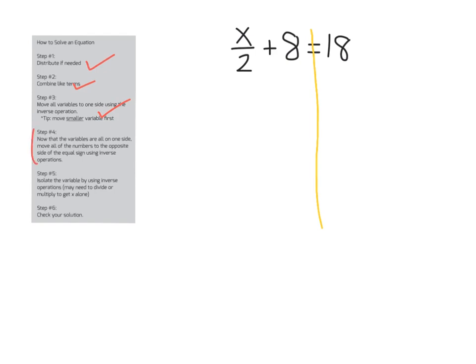Step 4, now that all of our variables are on one side, so we just have 1x and it's on the left, we need to move this plus 8 over to the other side. So, how do I undo adding 8? Well, I'm going to subtract 8. If I do that to the left, I'm going to do it to the right and I drop down what's left. x divided by 2 equals 10. All right, done with step 4.